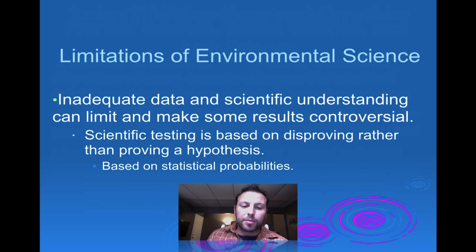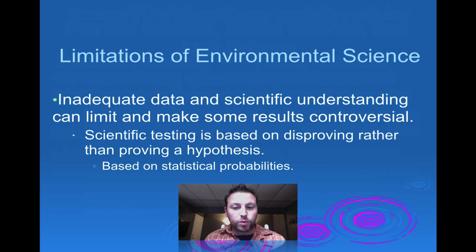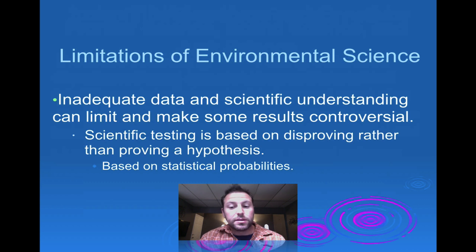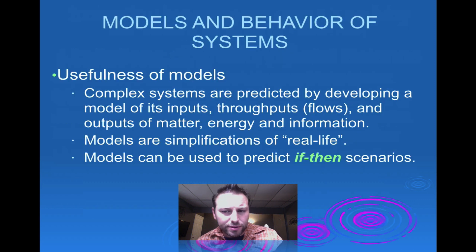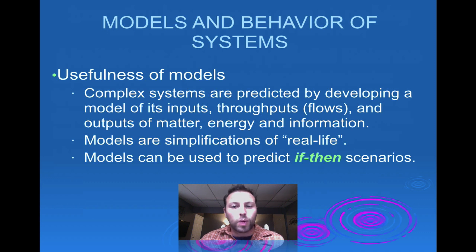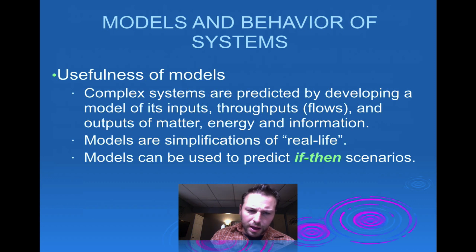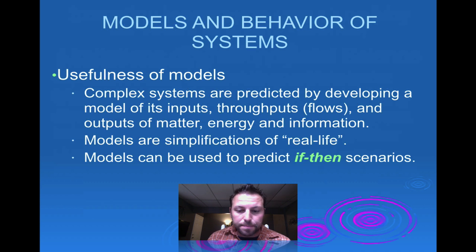The problem with environmental science is, first off, we may not have a huge understanding of what is going on. With that very small understanding, we may overlook variables that are affecting systems, and sometimes results can be controversial because we don't know everything. We can try to break it down and use models to help. Models — we see them with weather all the time. Meteorologists use a number of different models to predict weather systems or things happening in our environment. They're simplifications of what's happening in real life, and we'll use a number of them in class to produce 'if-then' scenarios.